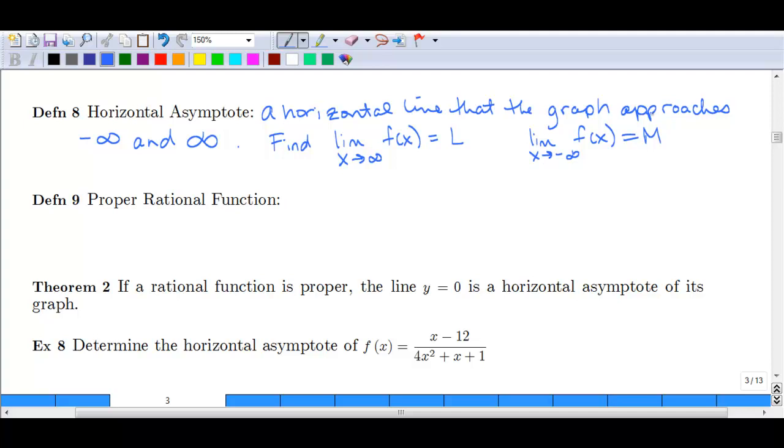There are also what are known as slant asymptotes, which we'll talk about a little bit later when we get to conic sections. Again, horizontal asymptotes are more guidelines than hard and fast rules. Now, the easiest horizontal asymptote to find is when we have a proper rational function. And if you recall, rational function is what we've been dealing with. They have that ratio as that root word, meaning fraction. So it is a ratio, P(x) is our top polynomial, Q(x) is our bottom polynomial.